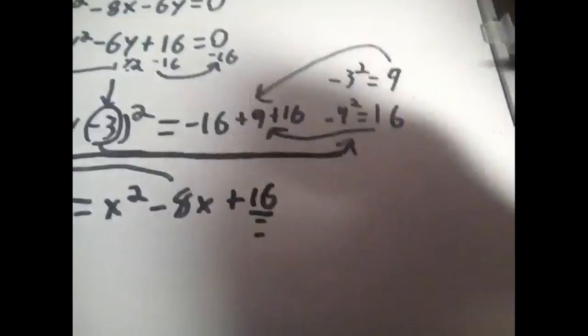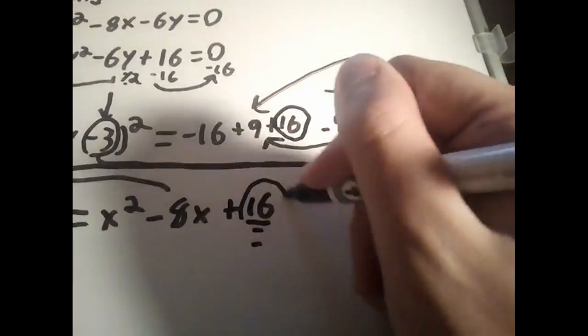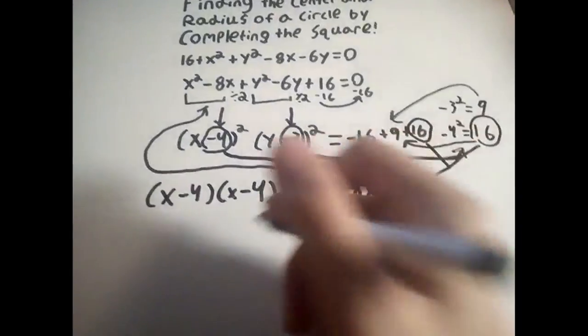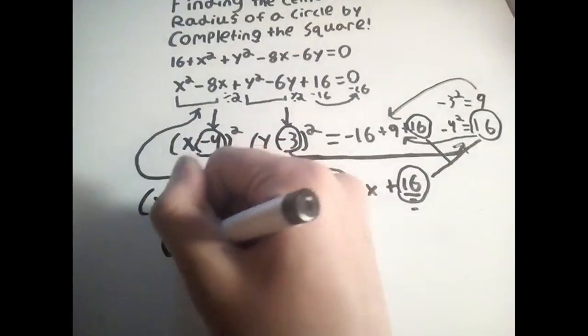Hopefully you see too that these numbers are the same as the constants when you factor out the two factors. After moving all the constants to one side, just simplify. And there we go, a fully-fledged circle equation that we can use in numerous ways.